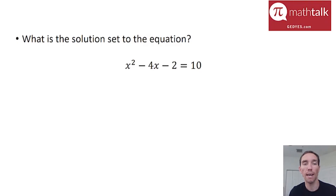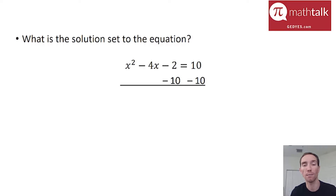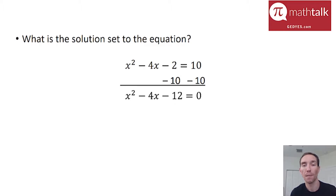We have a question asking for the solution set to the equation x squared minus 4x minus 2 equals 10. When solving equations, I really want to get my equation to be equal to 0. So I'm going to subtract 10 from both sides. When I do that, I'm left with x squared minus 4x minus 12 equals 0. The reason I want to set it equal to 0 is so I can do what's called factoring, or what I call reverse FOIL.